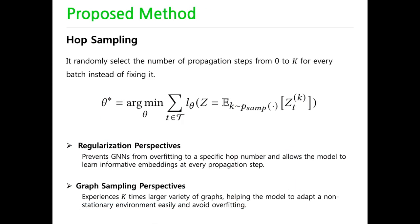To tackle the presented issue, this paper proposes a simple but effective regularization technique called Hub Sampling. The core idea in the proposed method is that it randomly selects the number of propagation steps instead of fixing it.